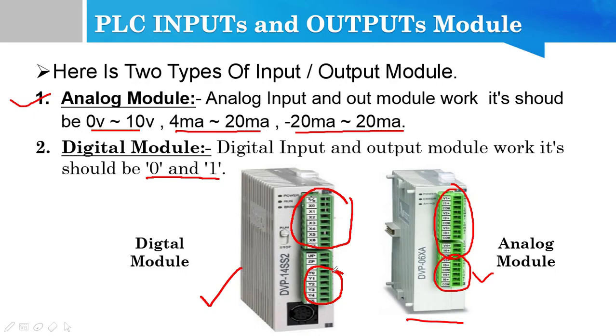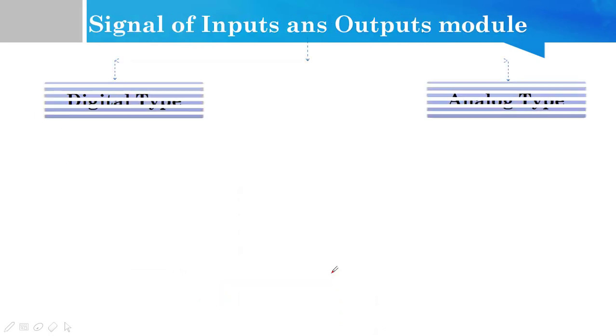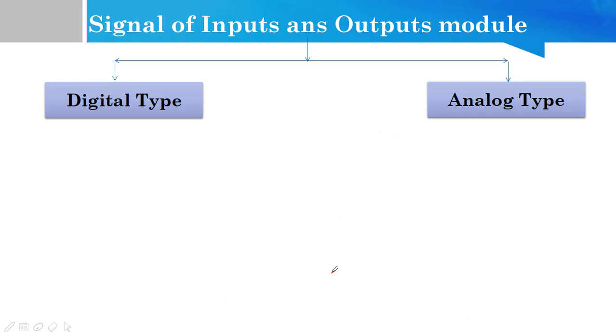We have seen that the signal input and output has two parts, one of the digital types and one of the analog types. When we look at the digital type, there are inputs and outputs.